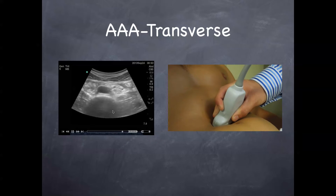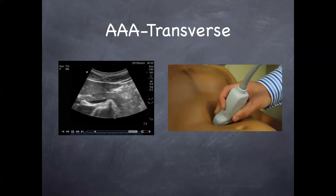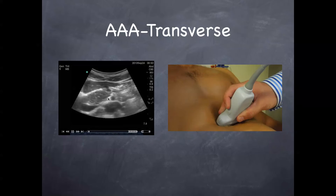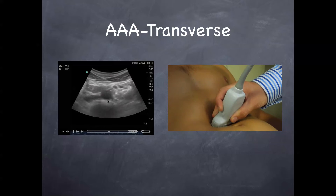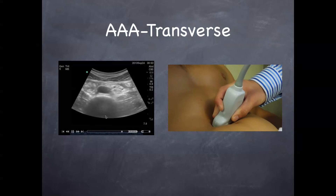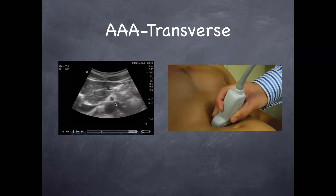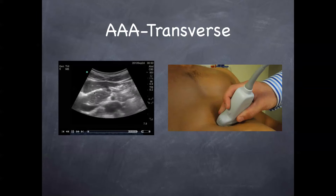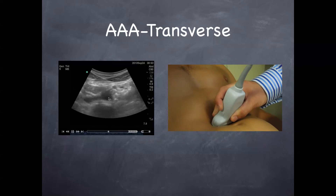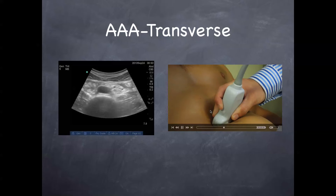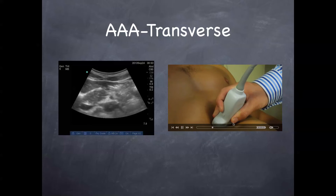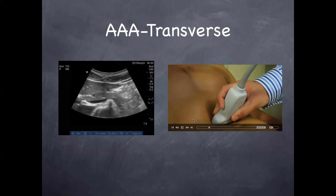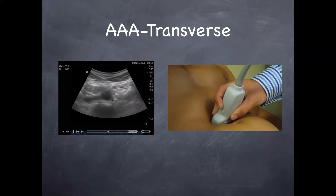In the transverse view, the landmark you need to find every time is your vertebral body. It's a hyperechoic line with significant shadow behind it because it's a bone. Here's your aorta right in front. Here's your IVC, which kind of looks like a teardrop — it's going to be on the right of the patient. The aorta is going to be on the left of that, coming all the way down the body right to the belly button where it splits off.